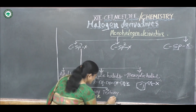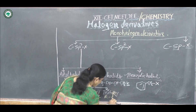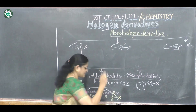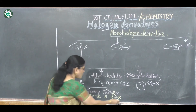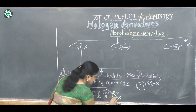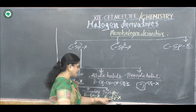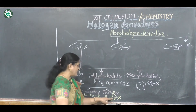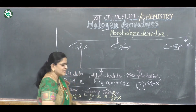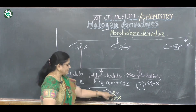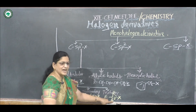In tertiary alkyl halides, represented as CR3X, the halogen is bonded to a tertiary carbon atom — a third-degree carbon atom — because this carbon atom is bonded to three carbon atoms.